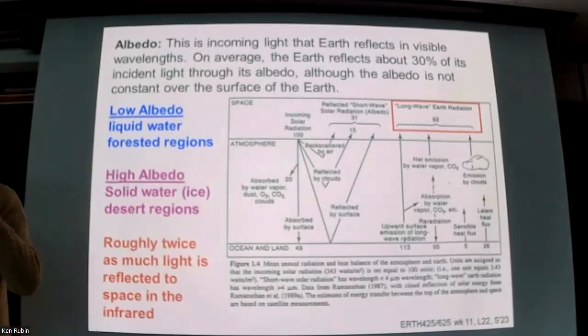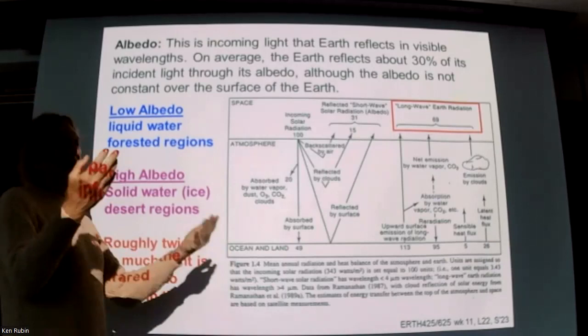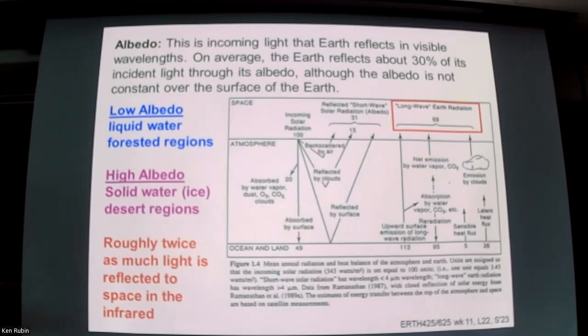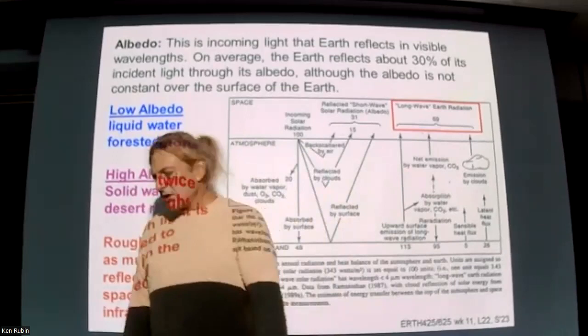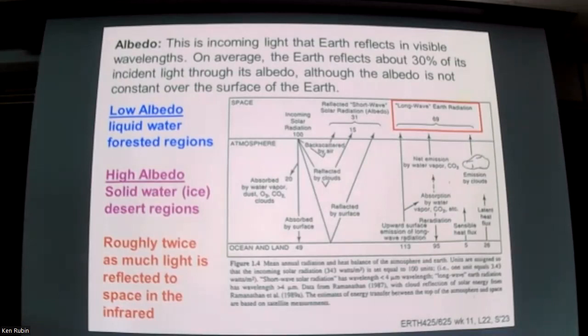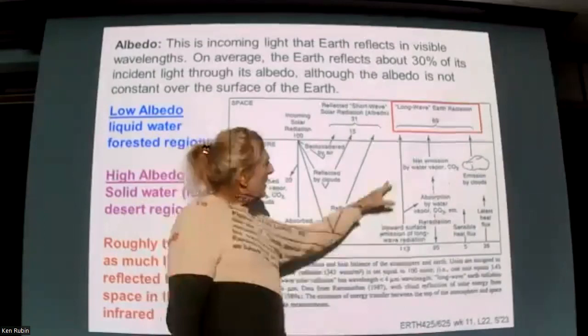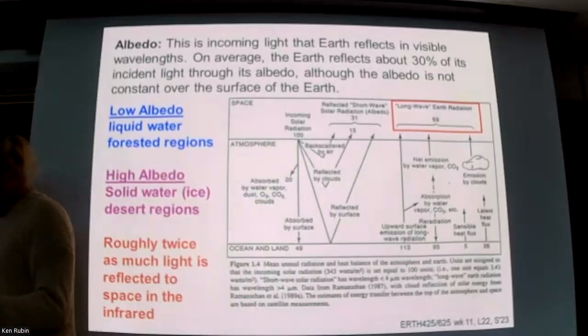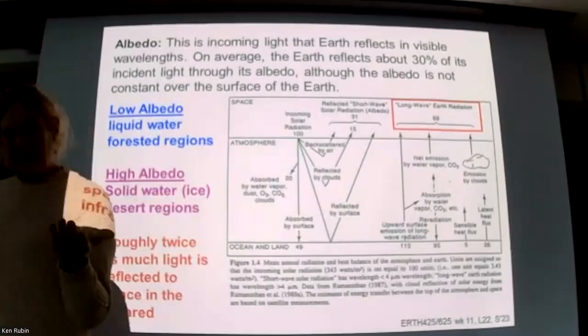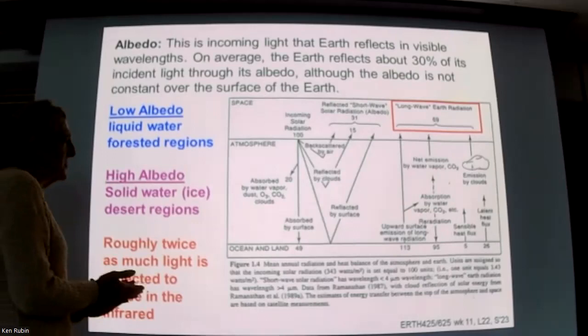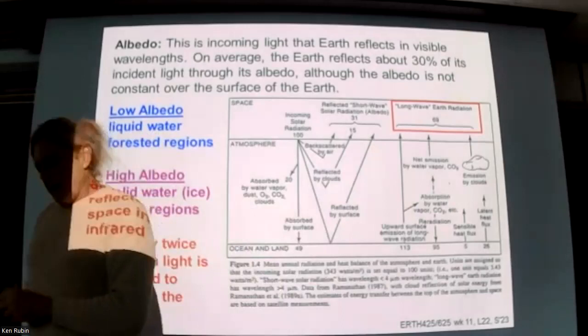Albedo varies all over the planet — ice sheets reflect more light than liquid water, and desert continents reflect more than forested regions. Of the original 100 units, a little more than two-thirds goes on as long-wave radiation — longer wavelength infrared that we can't visibly see. If it were to bounce straight out to space without any interaction with the atmosphere, it wouldn't have any impact on the temperature structure.